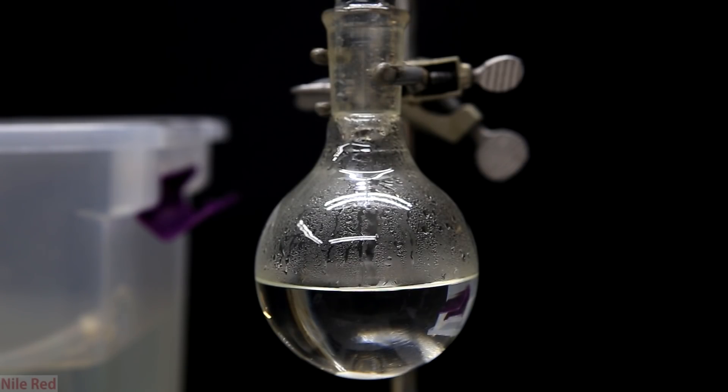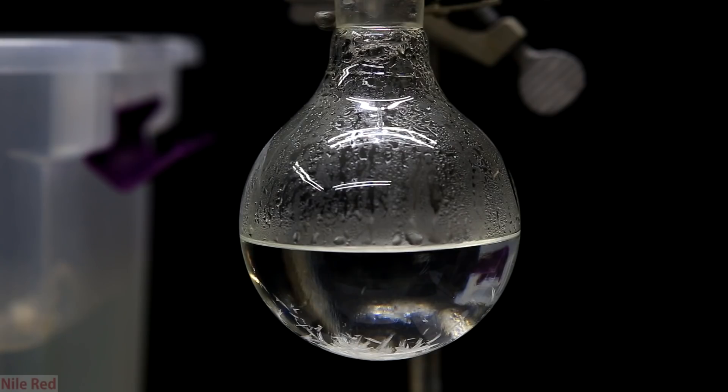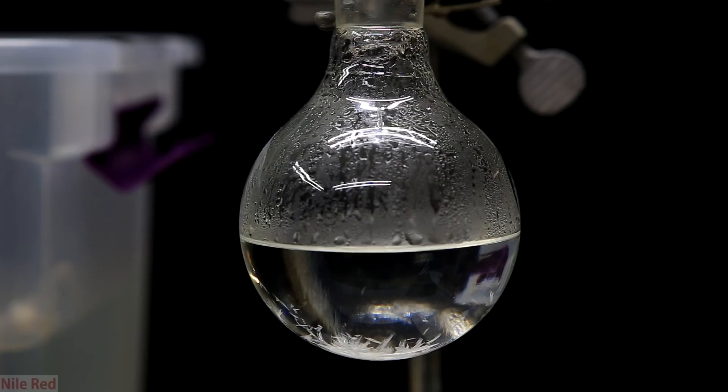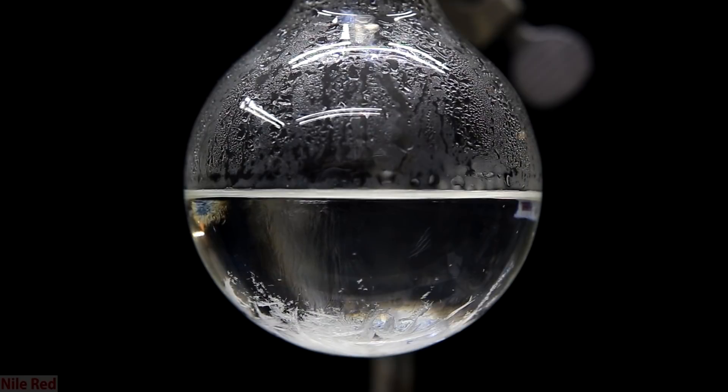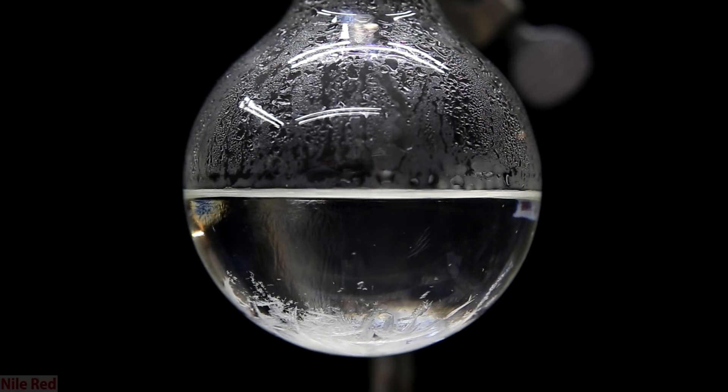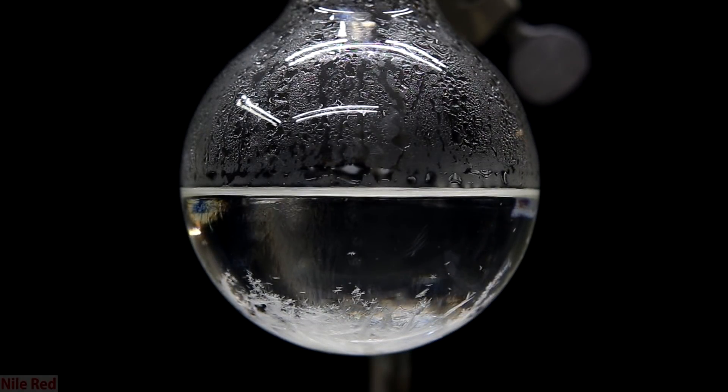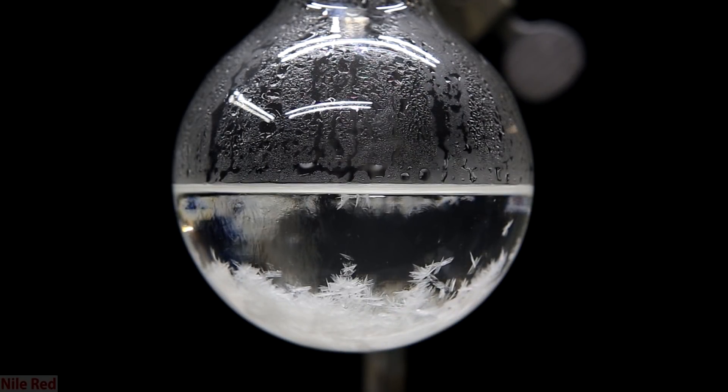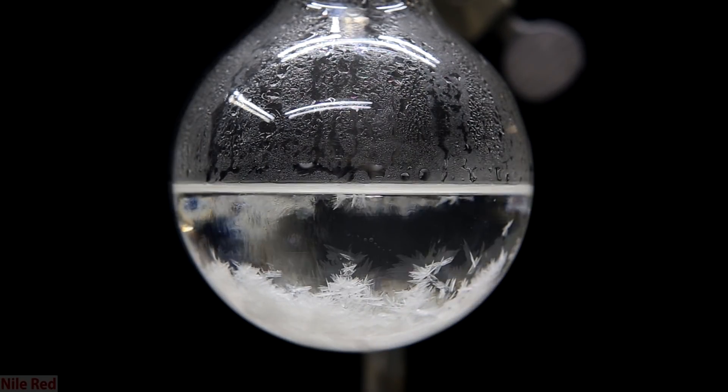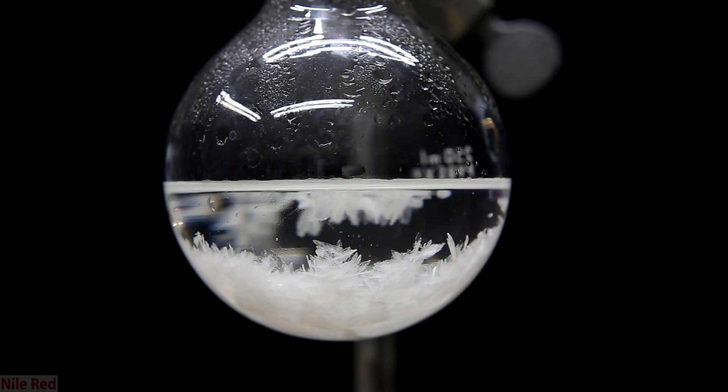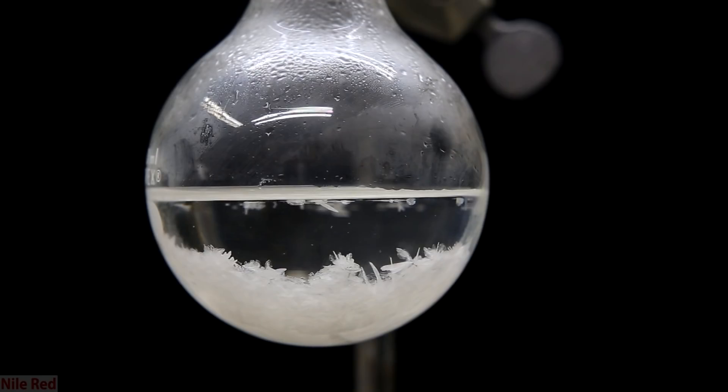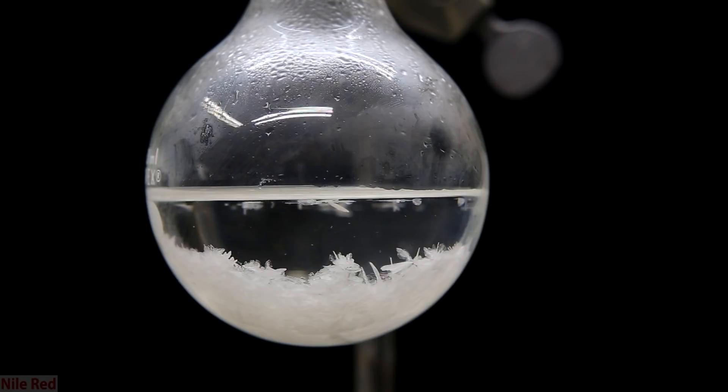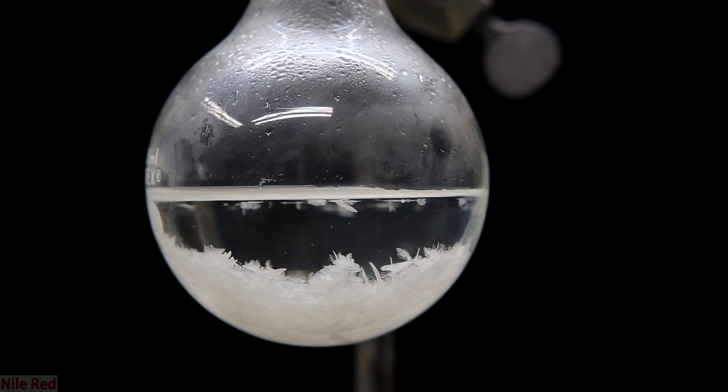After the 20 minutes has passed it's removed from the oil bath and allowed to cool to room temperature. We allow the solution to cool slowly and as it cools some crystals will form at the bottom. As time passes more and more crystals form. After the solution has reached room temperature there's quite a few crystals. To precipitate as much as possible the solution is placed in the freezer for several minutes.